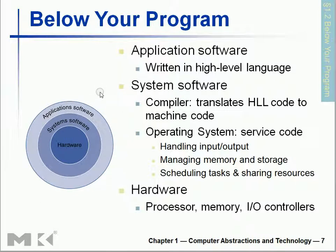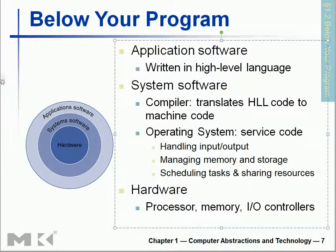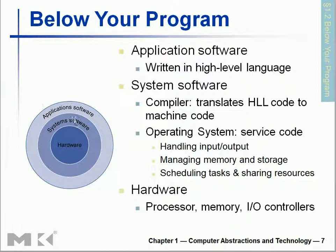We already know about programming language. The programming language we write is actually the high-level language. That high-level language is then converted into system language, or assembly language. And then that assembly language goes to binary language — zeros and ones. You can divide it into three parts: the application software part, which is the front end, written in high-level language.